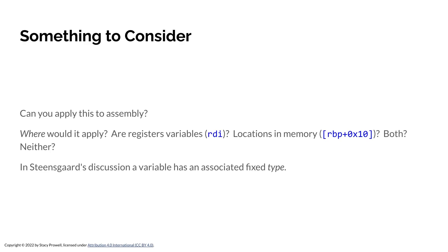Can we apply Steensgaard to assembly, and where would we apply it? Do we apply it to registers as variables, to memory locations, to both, or neither? In Steensgaard's discussion a variable has an associated fixed type. But in assembly, a register could one minute hold a memory location, then an offset or index, then a simple integer, then a floating point value — so we just don't know.